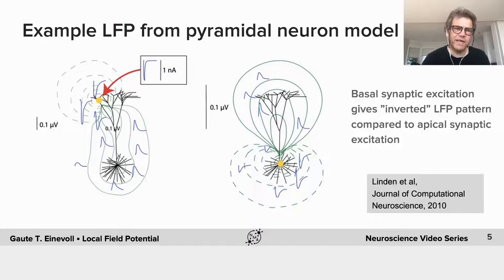So there's two things to say there. One is that if you have the synapse here instead, you get the opposite pattern. So for one thing, you can see that it's not very local in the sense that the synaptic input here gives a large signal down here.